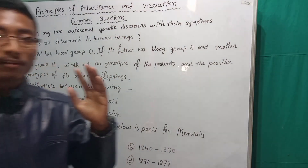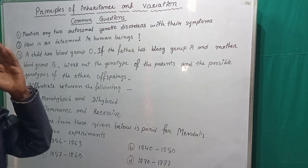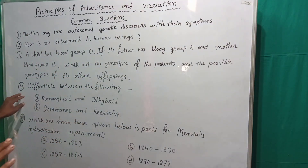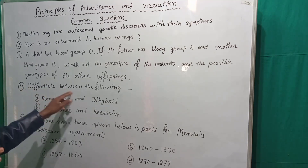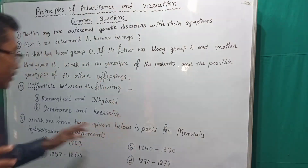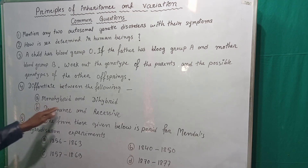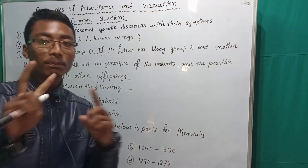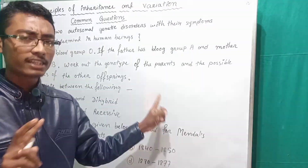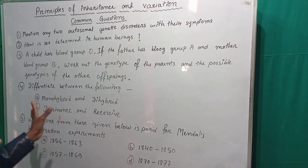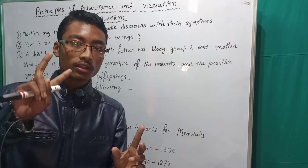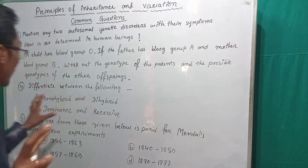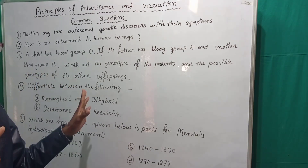Next, you need to look at the difference between antigens and antibodies. Also, write the difference between monohybrid and dihybrid — write four points. Next: Dominance and recessive — write a point for dominance and a point for recessive, and differentiate between them.